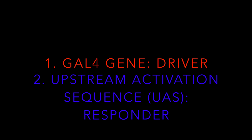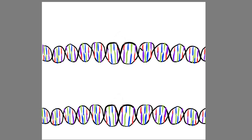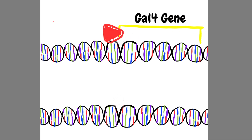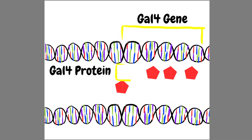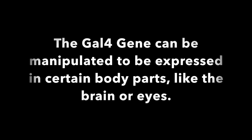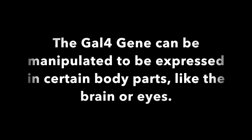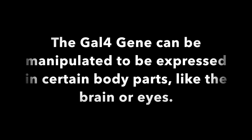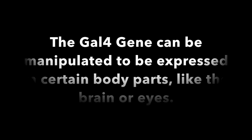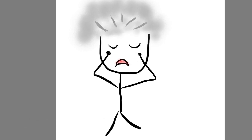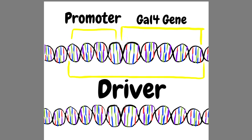There are two parts: GAL4 and UAS, which stands for upstream activation sequence. First, we start off with our GAL4 gene, which, shockingly, codes for the GAL4 protein. This gene can be manipulated to be expressed in a specific part of an organism's body — for example, the eye of a fruit fly or a brain. Side note: I have never tried the brain expression since I don't have one. This section — this GAL4 gene with the promoter sequence — is called the driver.